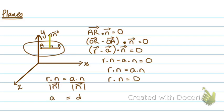This basically will be R dot unit vector of N equals D. The small d represents the perpendicular distance from a point to the plane. This capital D does not have any geometrical meaning.